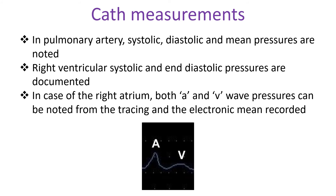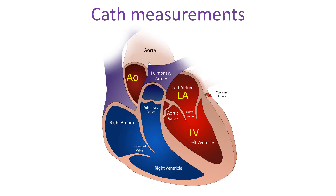Right ventricular systolic and end-diastolic pressures are documented. In the case of the right atrium, both A and V wave pressures can be noted from the tracing and the electronic mean recorded. If the left heart is catheterized, aortic and left ventricular pressures are noted, akin to their right-sided counterparts. Left atrial pressures are easily measured when there is an atrial septal defect; otherwise, pulmonary artery wedge pressures are taken as surrogates of left atrial pressure.